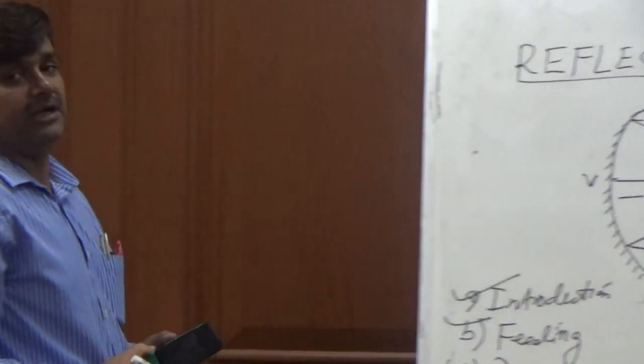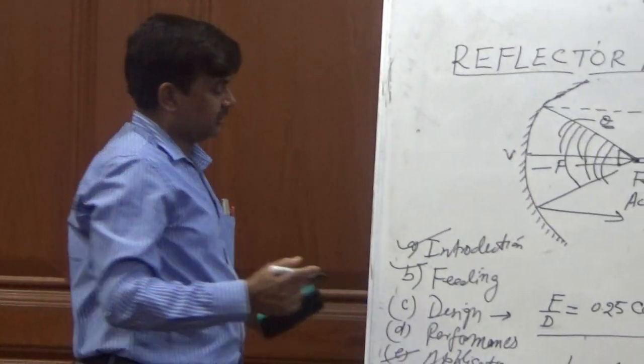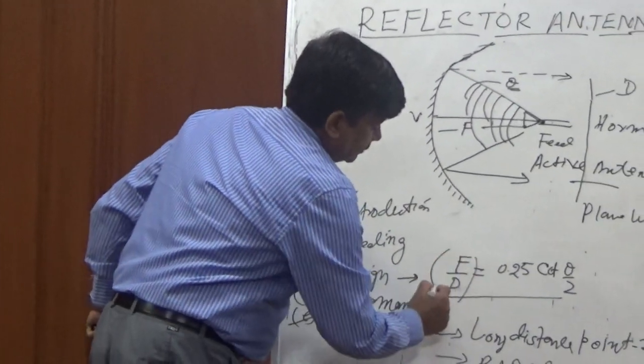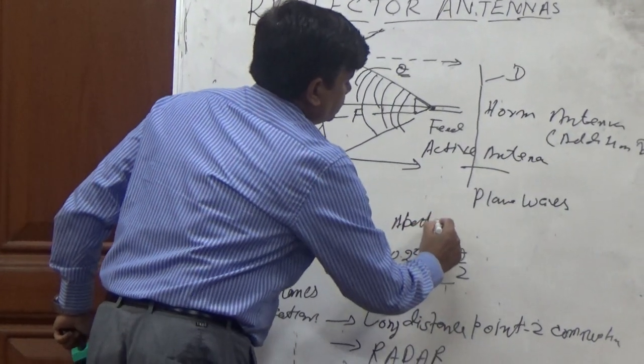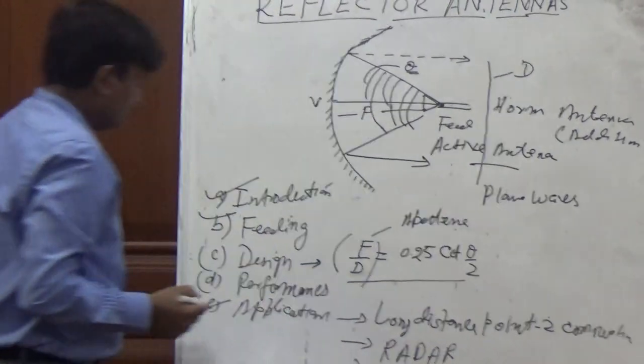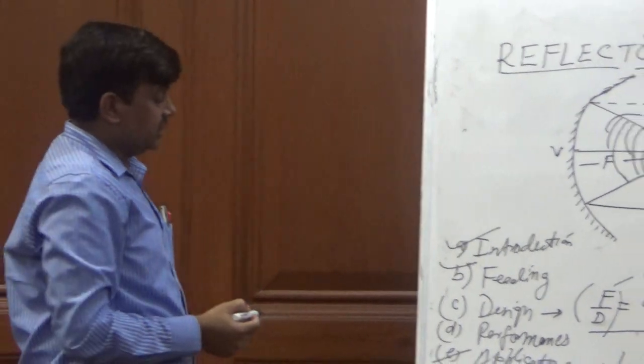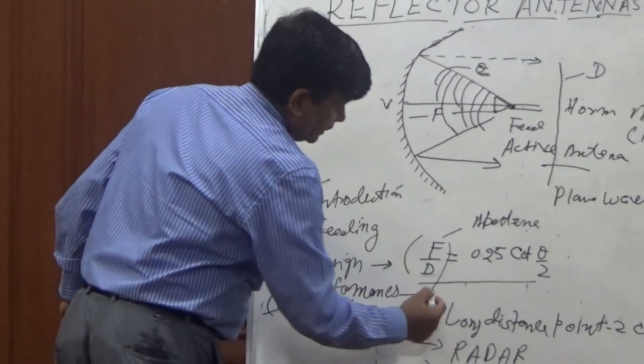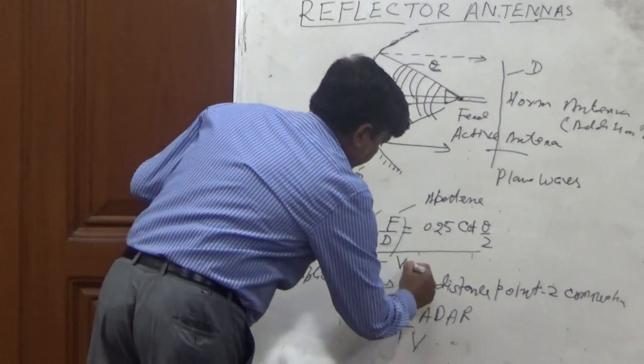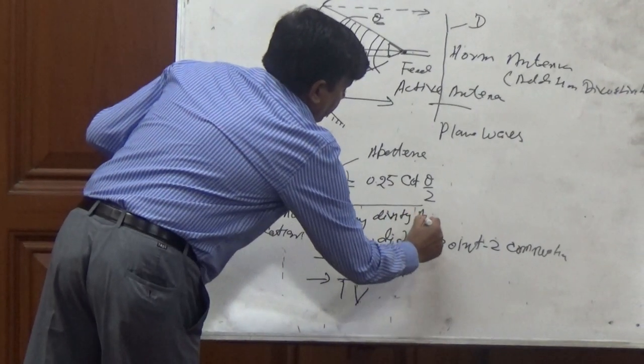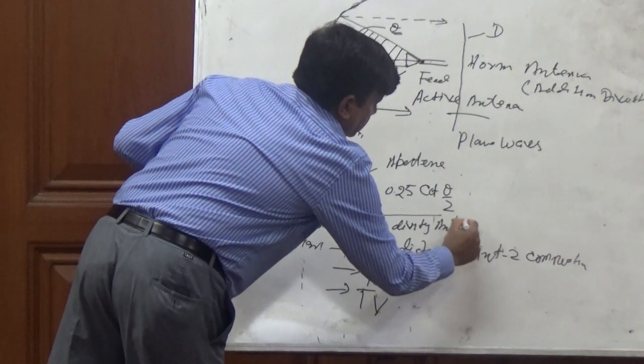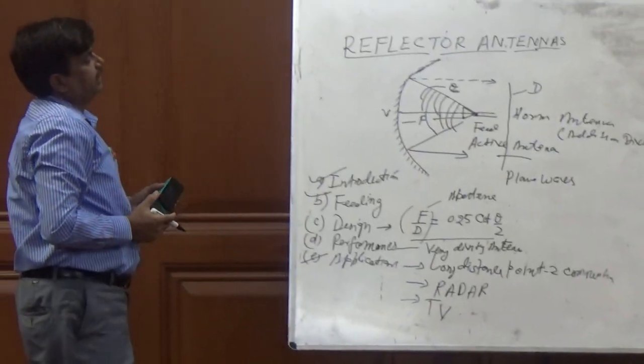And having this parameter we can estimate the design parameter and this is also known as aperture number. In performance section, I will only mention that it is very high directivity antenna. So these are all about the reflector antenna.